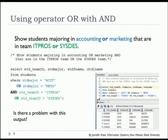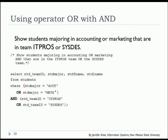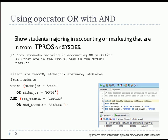The solution is to remember that whenever you're using OR operators, you should always put parentheses around those evaluations. Student major equal to accounting or student major equal to marketing goes in parentheses. Then outside that, put the AND operator, and the team evaluation of either IT pros or systems design should also be in parentheses. With that fix, we find there's only one student that meets that criteria.